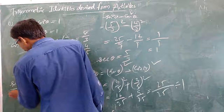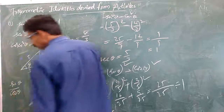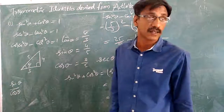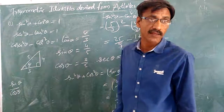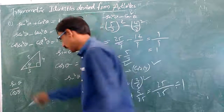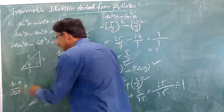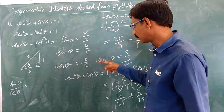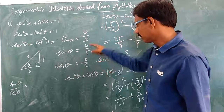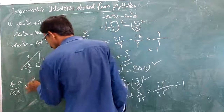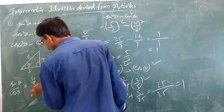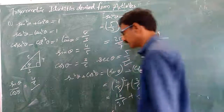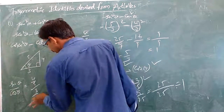Now, sin θ divided by cos θ. What do we get? Sin θ is 4/5, and cos θ is 3/5. So sin θ divided by cos θ equals 4/5 divided by 3/5.